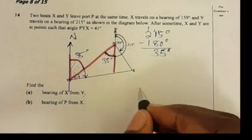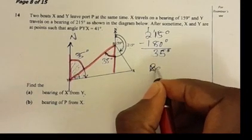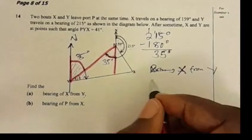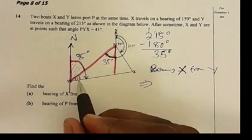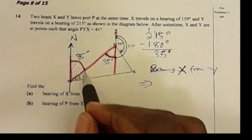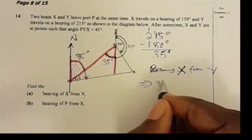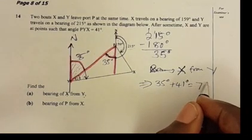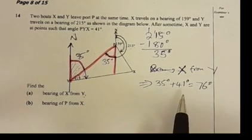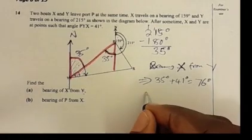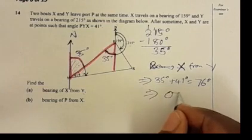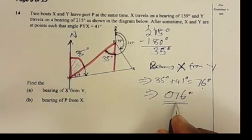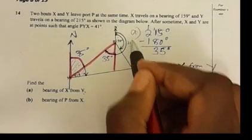The bearing of X from Y equals 35 degrees plus 41 degrees, which gives 76 degrees. But remember, bearing is measured using three digits, so this is written as 076 degrees. This is the bearing — always written with three digits.